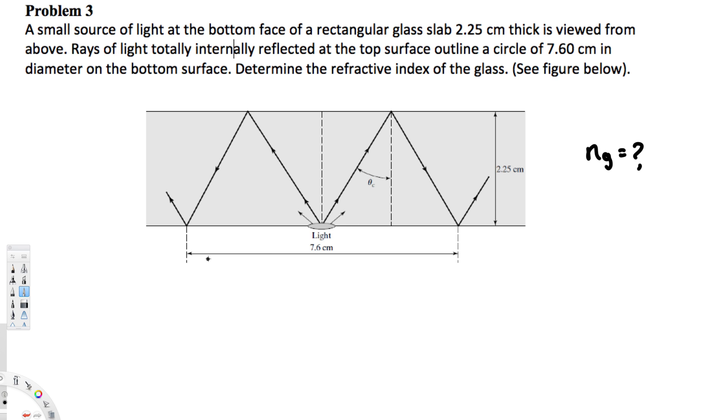And we know this total distance is 7.6 centimeters. Therefore, if we can find this distance we can use tan theta to find this angle because we have the adjacent, and if we find this opposite side that will help us to find this theta_c. Now let's go ahead and find this one.